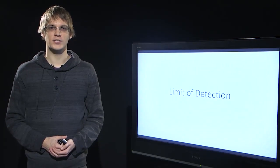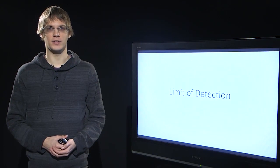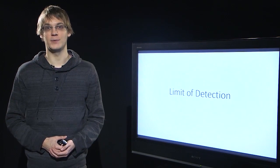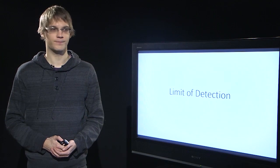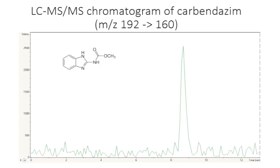In this video we will start talking about the topic of limit of detection. Let's look at an example first. Here we can see a LC-MS-MS chromatogram of a commonly used pesticide, Carpentazime. Obviously in this chromatogram the peak is present, so we can say that the analyte is present.